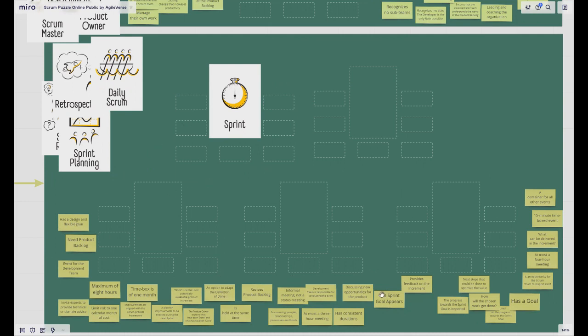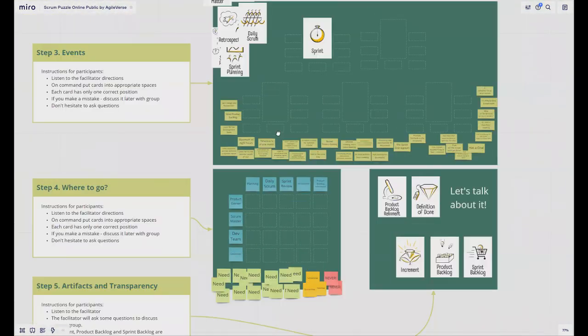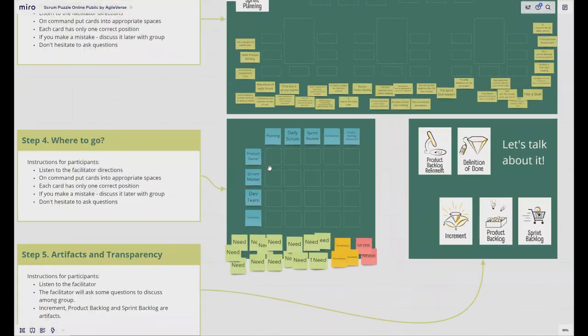You should ask people to complete these green cards to the appropriate places. Each of the Scrum events has a lot of attributes and all of these cards should be attached to some of these events. After this, you should go through these cards and discuss with people why this is an attribute of this event. If you find any mistakes, you can check mistakes in the facilitator's guide. If you find any mistake, you can discuss it right now with the people and put it into the right place. After completing, that's all. This step is finished and we can go to the next fourth step.